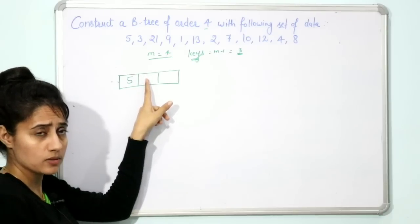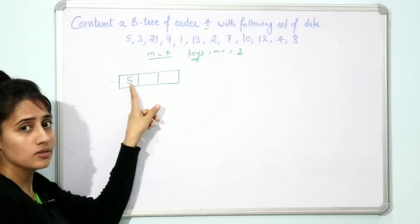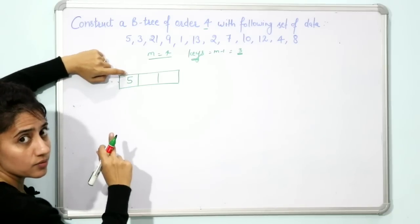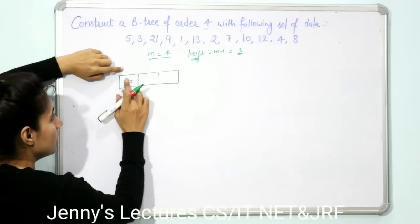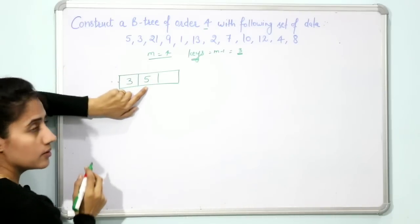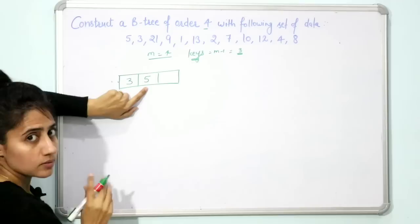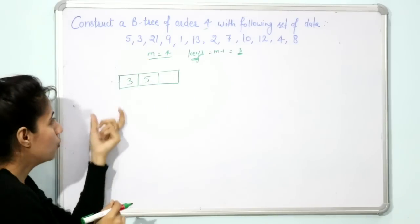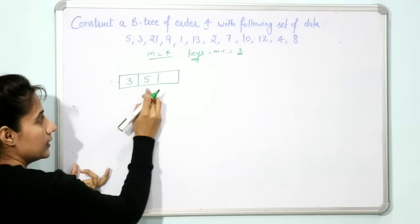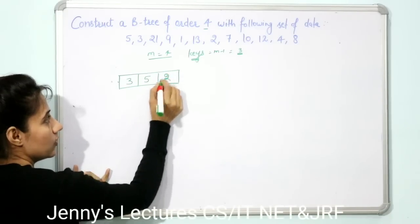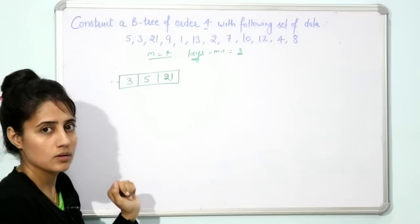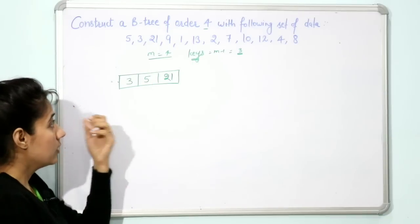We cannot put 3 after 5 because 3 is less than 5. We compare 3 with 5, and since 3 is less, it goes before 5 — so the node becomes [3, 5]. Next is 21. Since 21 is greater than both 3 and 5, it is inserted at the end: [3, 5, 21].